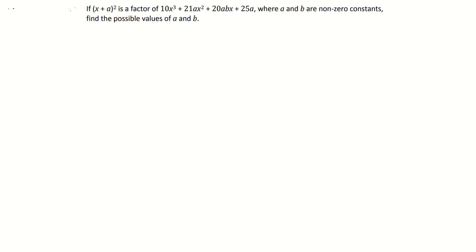If x plus a squared is a factor of the following, where a and b are non-zero constants, find the possible values for a and b.